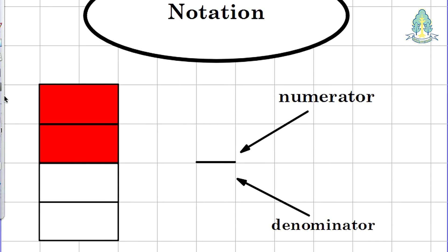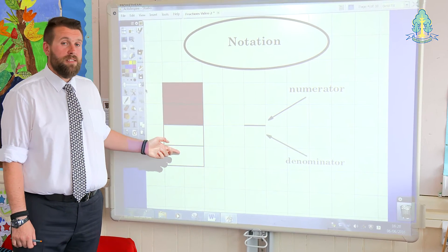Children are shown that when a whole is split up, each part is given a name, depending on the number of parts. The bottom number of the fraction is the number of parts in the whole. The bottom number is called the denominator. In this example, there are 4 parts altogether.